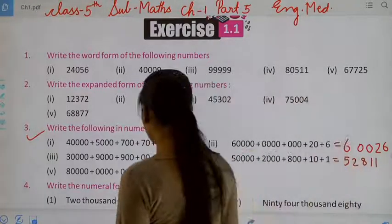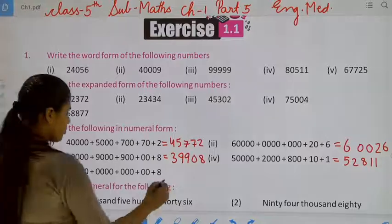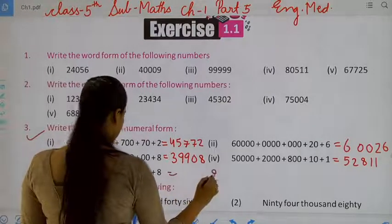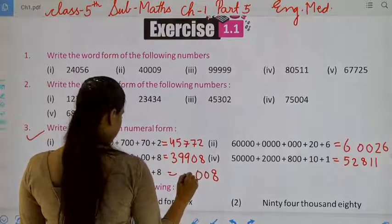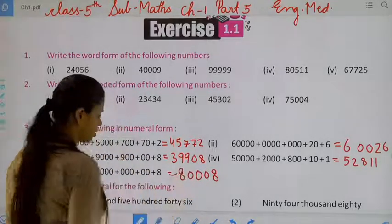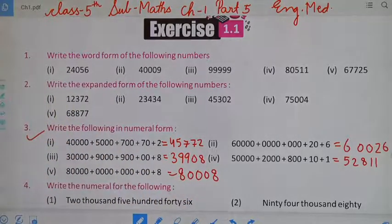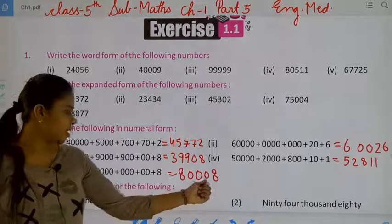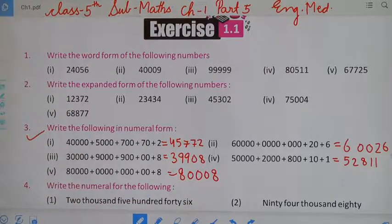Now move to the next — ones, tens, hundred, thousand, and ten thousand. It will be eighty thousand, eight. Now, if you want to take a screenshot you can take it — ones, tens, hundred, thousand, ten thousand.